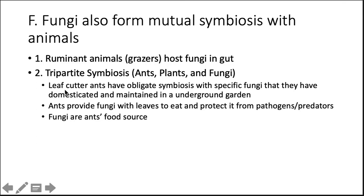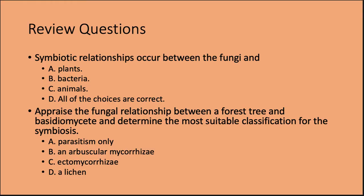Another unique symbiosis is the tripartite relationship between ants, plants, and fungi. Leafcutter ants have an obligate symbiosis with a specific fungus — they really need it to survive. They have domesticated this fungus and maintain it in an underground garden. The ants provide the fungi with leaves to eat and protect it from pathogens and predators; in return, the fungi are the ants' food source. There is a short linked video on this — please watch it, it's really cool.